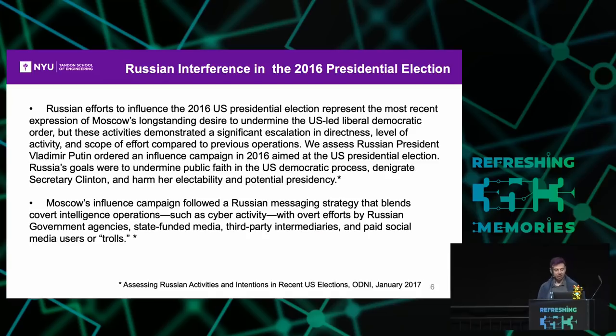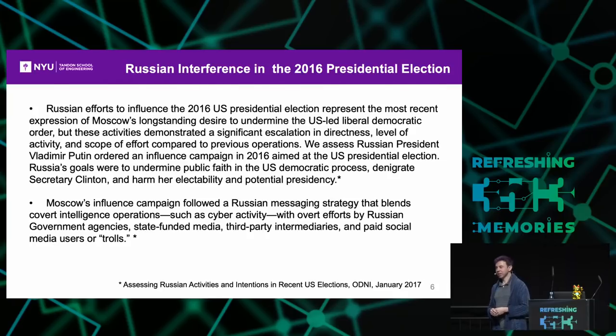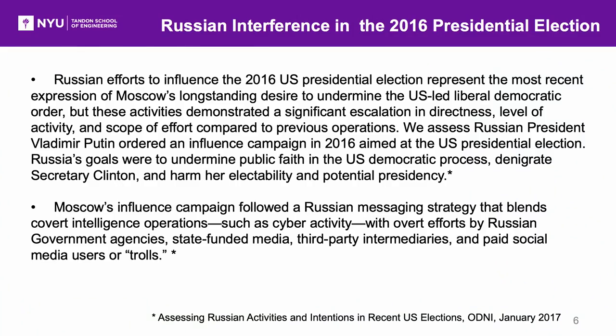In 2017, our Office of the Directorate of National Intelligence put out a report that pretty much unequivocally states that Russia tried to interfere in the U.S. elections and that Vladimir Putin was somehow involved within this interference. As far as the National Security Agency, the CIA, and the NSA, this is pretty much solid evidence that this occurred.